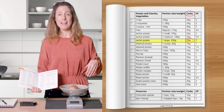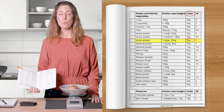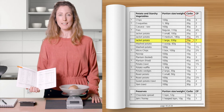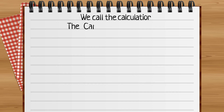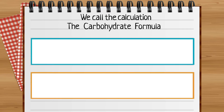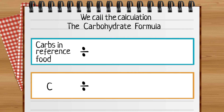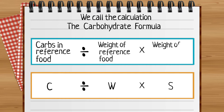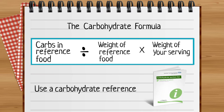So I can make my estimate more accurate if I weigh my potato and calculate the carbohydrate. Here's the calculation. C stands for carbohydrate in reference food, W stands for weight of the reference food, and S stands for the weight of my own serving. In this calculation we need two pieces of information from a carbohydrate reference.